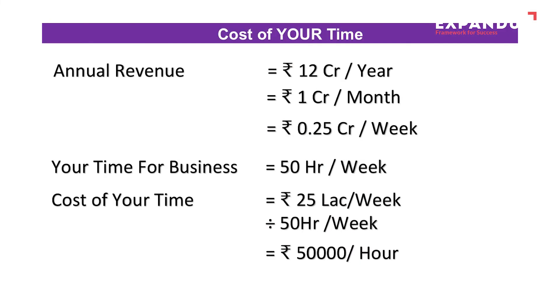At the same time, he is also making sure that all other functions like execution, purchase, production, quality, design, service, finance, etc. are being supervised. This owner works 50 hours a week, which means 25 lakh revenue from 50 hours of effort in a week. So his cost of time, based on current revenue, is weekly revenue 25 lakhs divided by weekly hours 50, which comes to 50,000 rupees per hour.